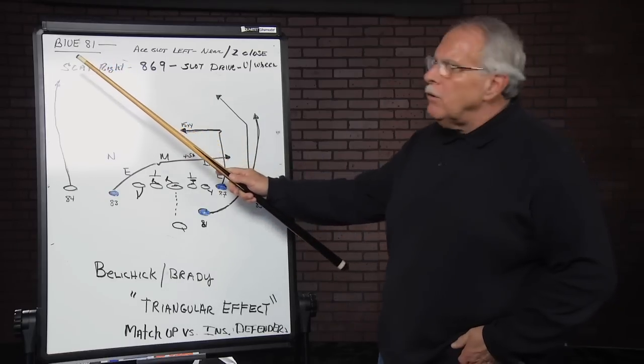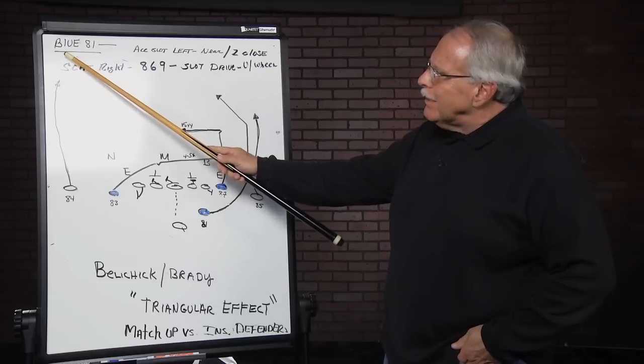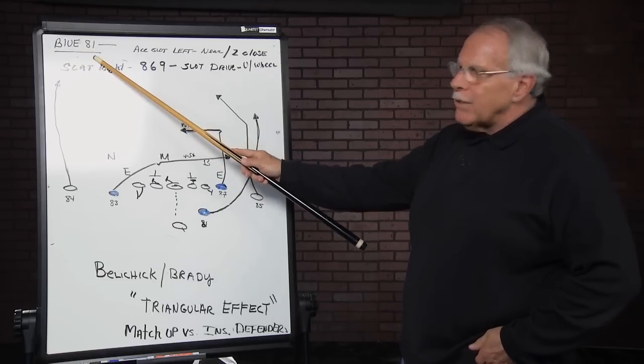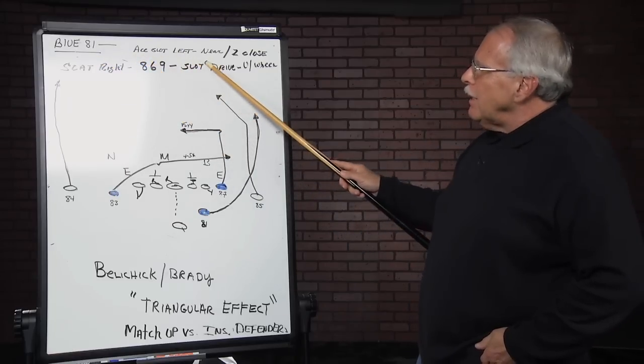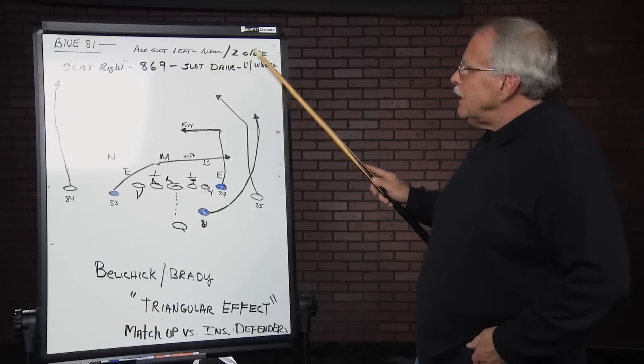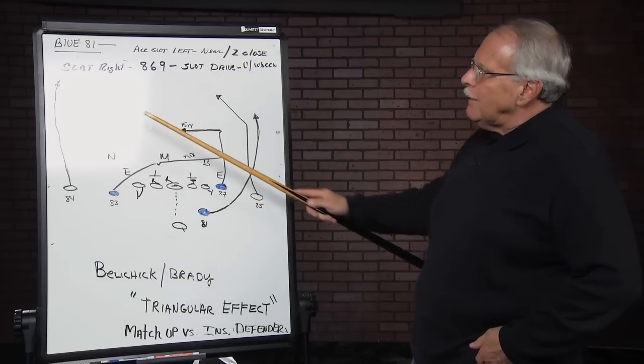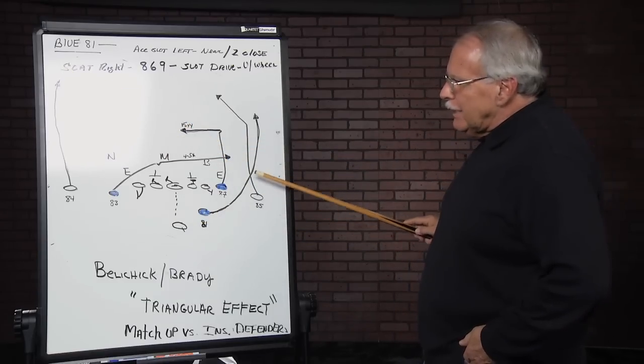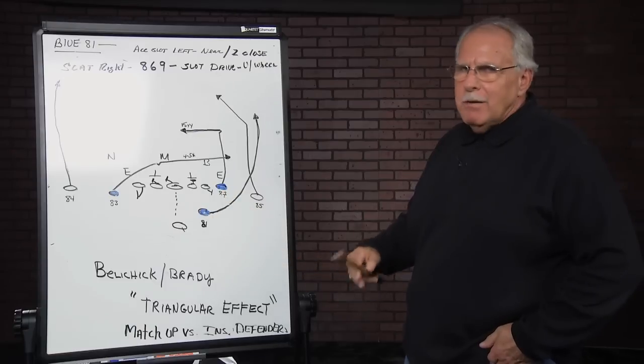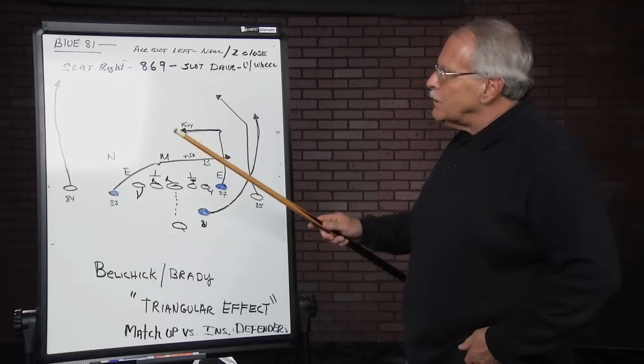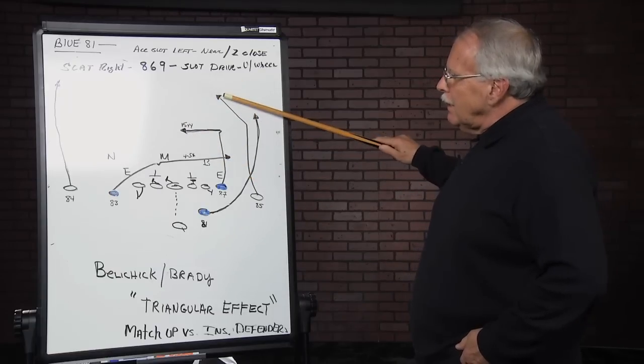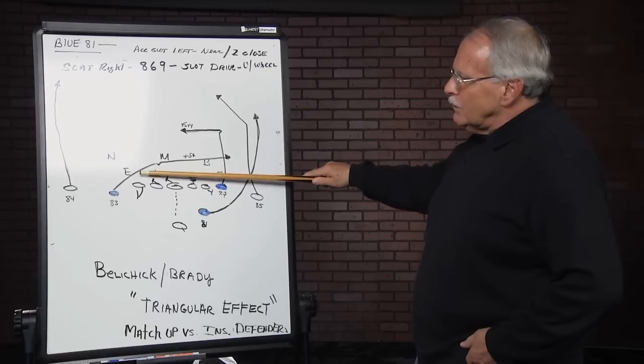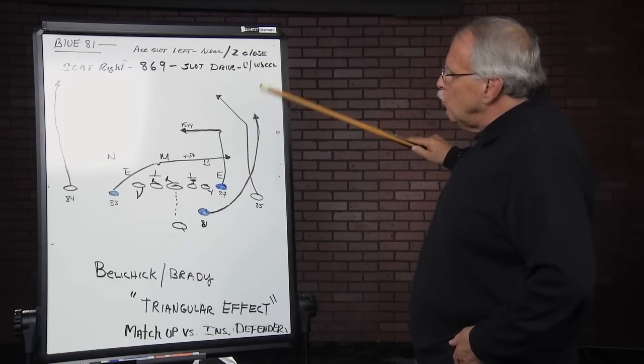If you were in the New England huddle, the play would sound like this. Blue 81, meaning three wide receiver personnel with 81 as a running back. A slot left near, Z close, meaning the Z will be close in the A slot. The play will be scat right, meaning that we're going to free release using scat protection. That means you have to throw hot. You're not maximum protection. 869, 869 route, slot drive, which is a slot drive to Welker with a U wheel.